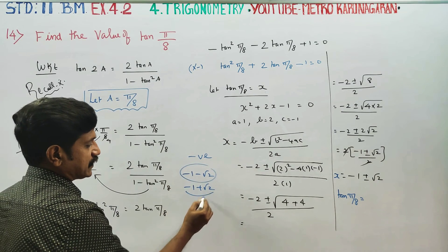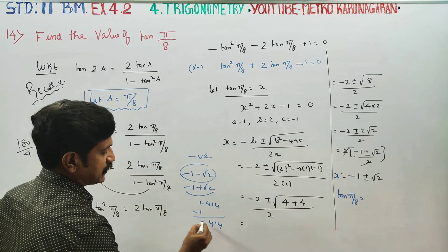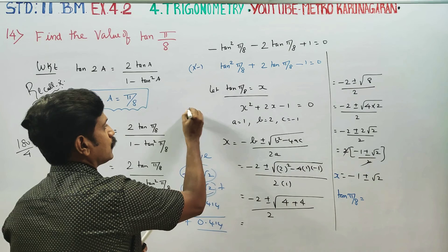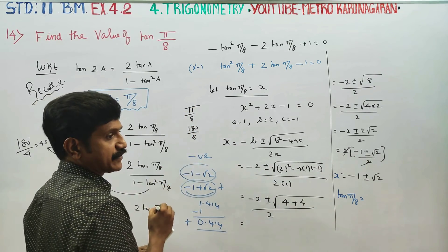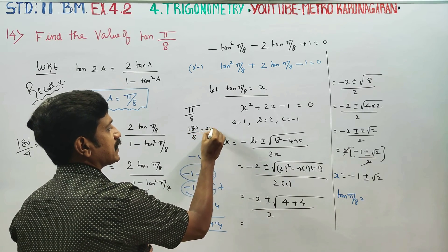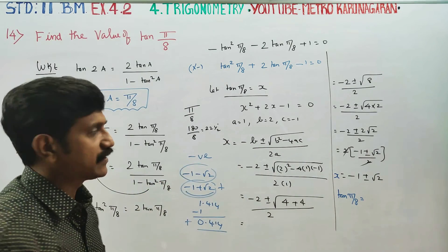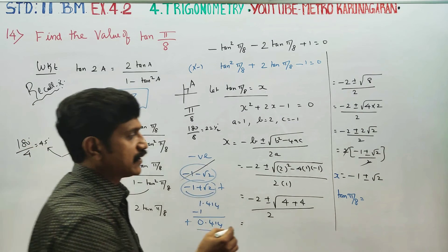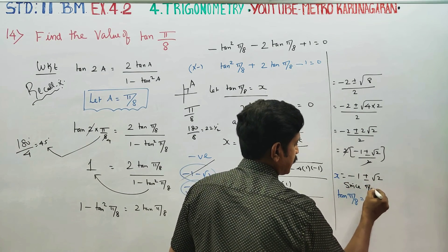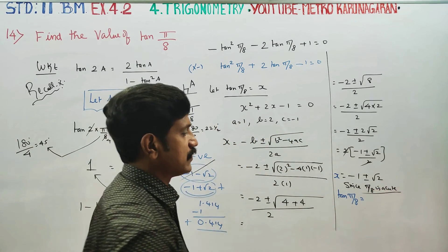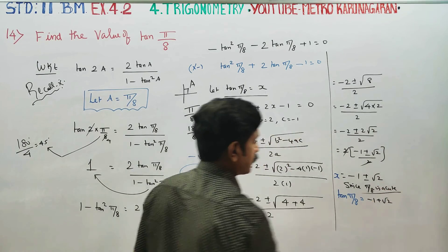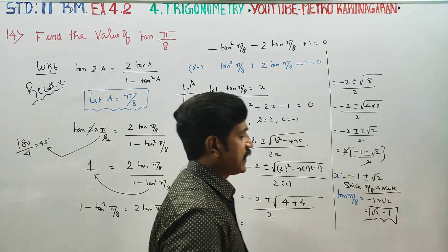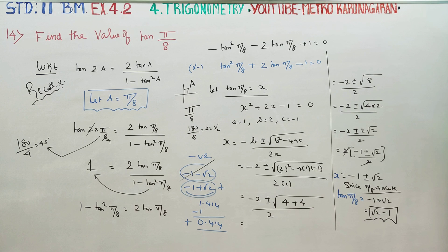Now, π/8 = 180°/8 = 22.5°, which is an acute angle in the first quadrant. In the first quadrant, all trigonometric values are positive. So we take the positive answer: tan(π/8) = −1 + √2.